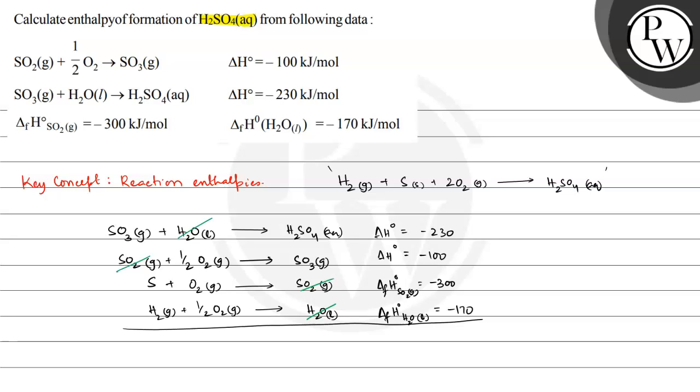And all we will be having is this. Sulfur trioxide, SO3 and SO3, will also be cancelled. So we will be having H2 gas plus half O2 plus half O2 plus 1 O2, that is 2 O2 gas total, plus sulfur solid giving H2SO4 aqueous. Best of luck.